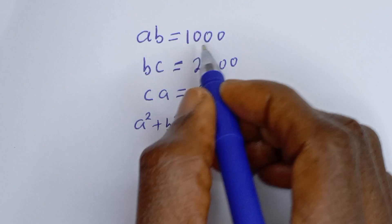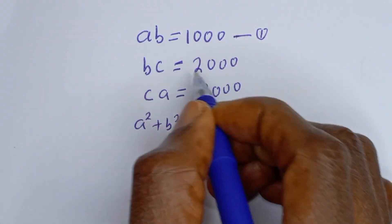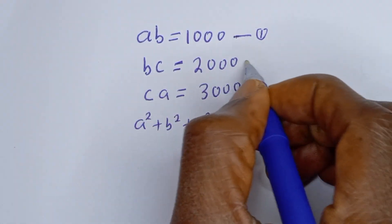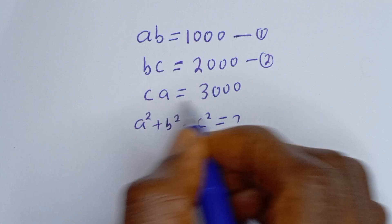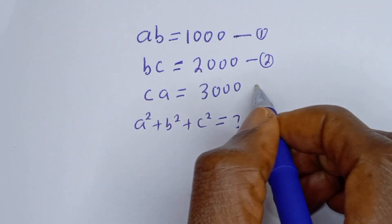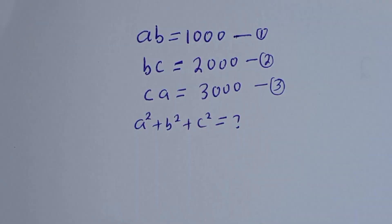A·B is equal to 1000 — let's call this equation 1. B·C is equal to 2000 — let's call this equation 2. And C·A is equal to 3000 — let's call this equation 3.